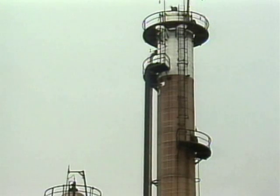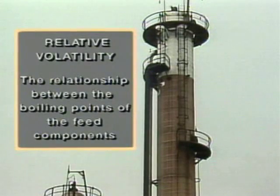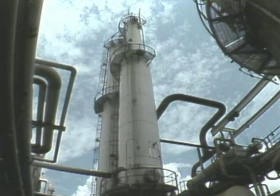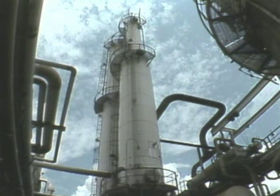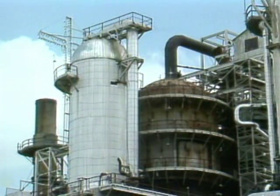The physical dimensions of distillation towers may be different. In general, they are most affected by three main factors: the relative volatility of the feed components, the feed rate, and vapor loading. Relative volatility is the relationship between the boiling points of the feed components. Feed components with a low relative volatility are difficult to separate because their boiling points are close to each other. To effectively separate such components, a tower requires a large number of trays and must therefore be fairly tall.